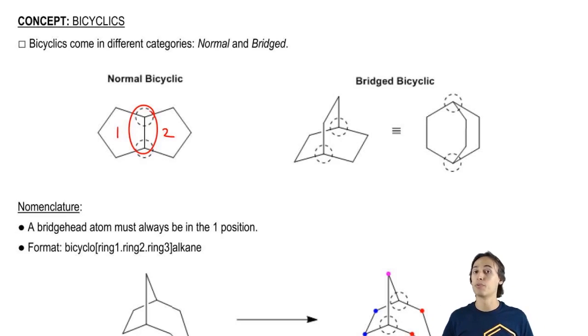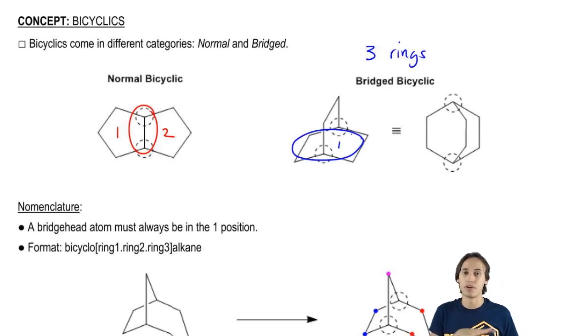Then we have the other type of bicyclic called the bridged bicyclics and these actually have three rings total. I know it can be difficult to visualize, but basically imagine that you have one ring down here that is basically the bottom, the base.